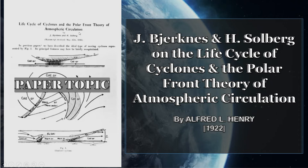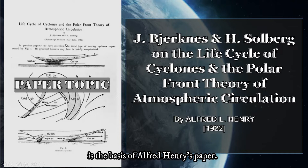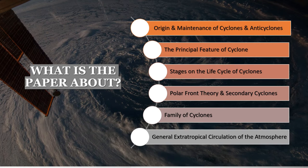The paper topic is about Bjerknes and Solberg on the life cycle of cyclones and polar front theory of atmospheric circulation. This is an extension paper, since the original was published in the winter of 1919 to 1920. The paper covers: the origin and maintenance of cyclones and anti-cyclones, the principal features of cyclones, the stages of the life cycle of cyclones, the polar front theory and secondary cyclones, the family of cyclones, and the general extratropical circulation of the atmosphere.